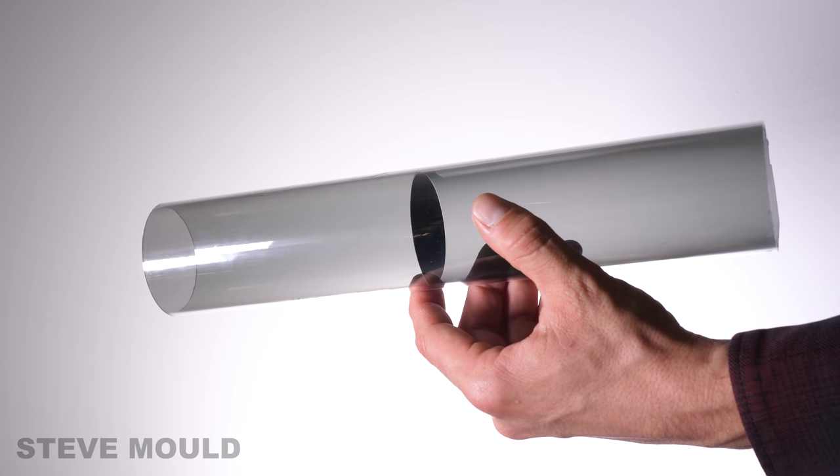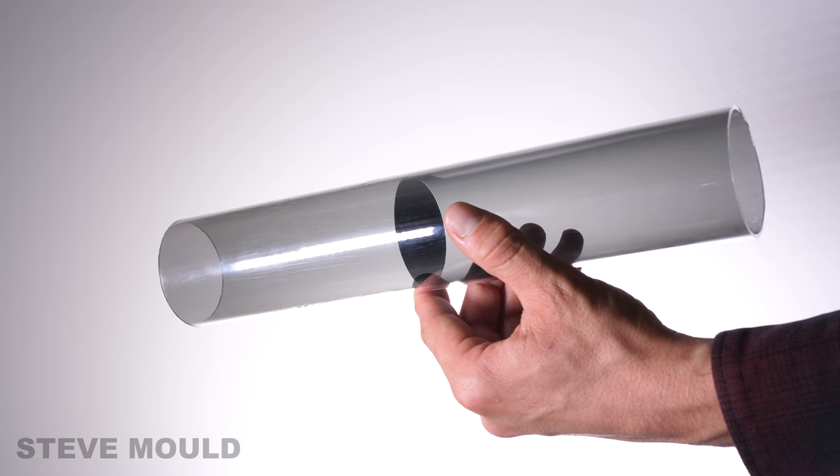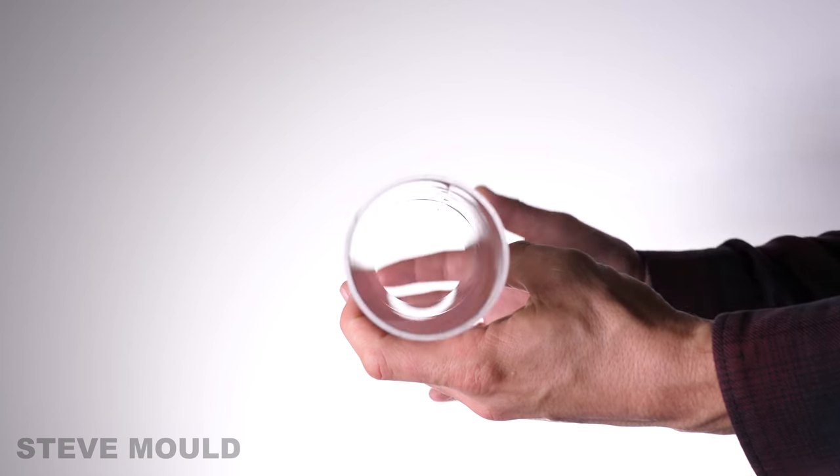You've got a cylinder and it appears as though there's a black disc in the middle of it, a kind of partition. But when you look straight down the middle, there is no disc. How about that?